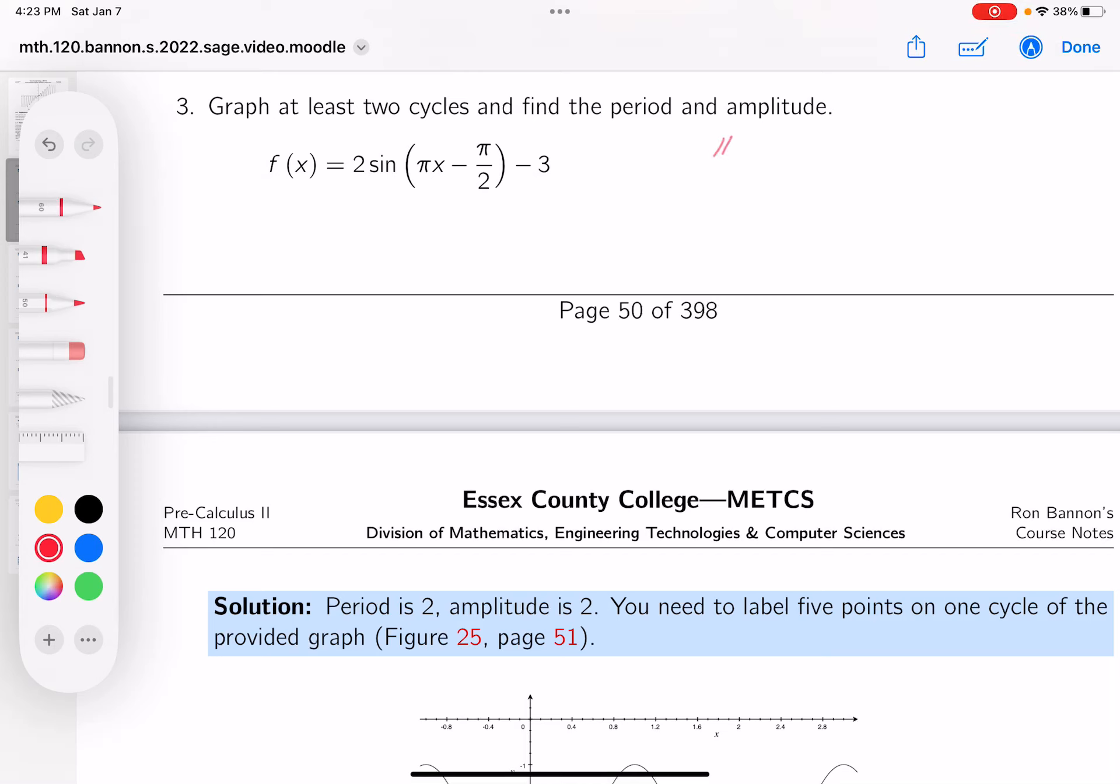Okay, a little more complicated. Pi over x. Let me go back to black ink. Pi x, whoops, really screwing up, huh? Pi x minus pi over 2 equals 0.